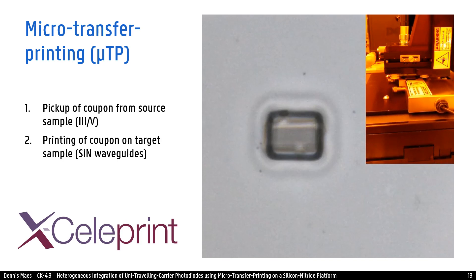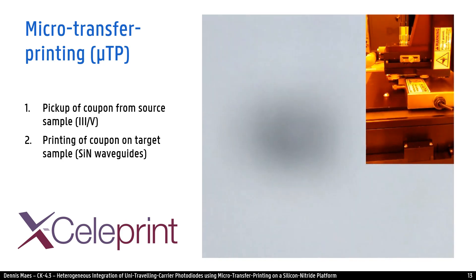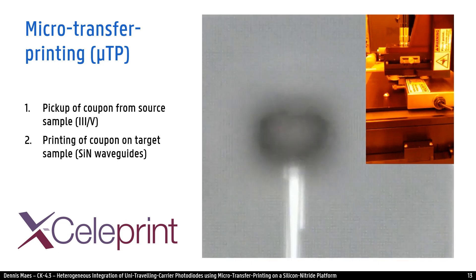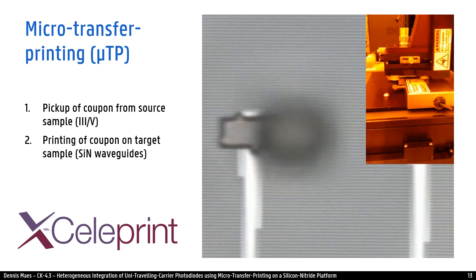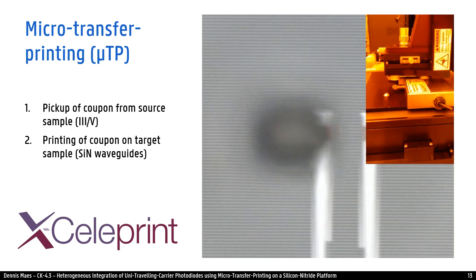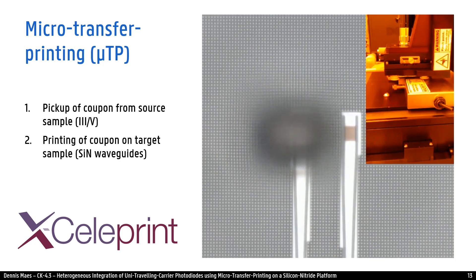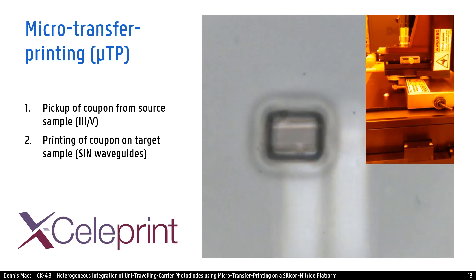Now the tool is moving to the target wafer and lowers the coupon. It aligns to the correct waveguide and will print this coupon on the target.